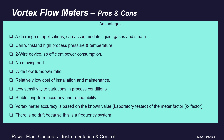The various advantages of vortex flow meters include a wide range of applications — they can accommodate liquids, gases, and steam. They can withstand high process pressure and temperature. Being a two-wire device, they have efficient power consumption. They have no moving parts, a wide turndown ratio, relatively low cost of installation and maintenance, low sensitivity to process condition variations, and very stable long-term accuracy and repeatability.